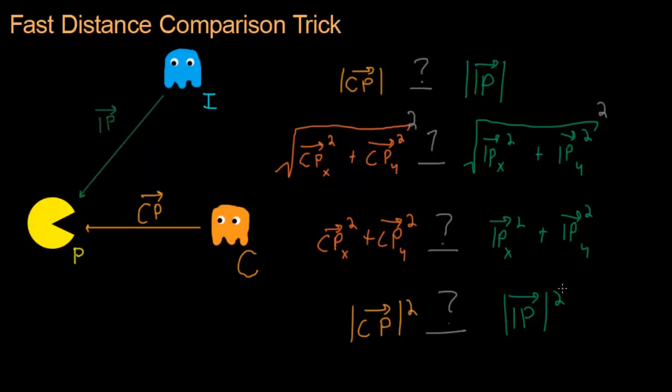So what we've learned is that it's actually faster, computationally, to compare the squares of the magnitudes of these two vectors, instead of just the vectors themselves. And I'm going to show you how to do that in the code portion of this video.